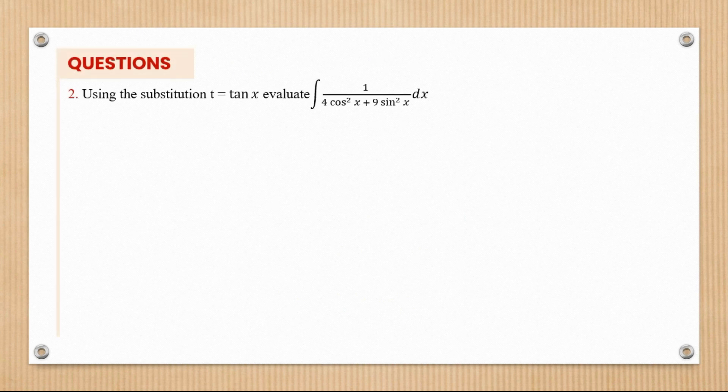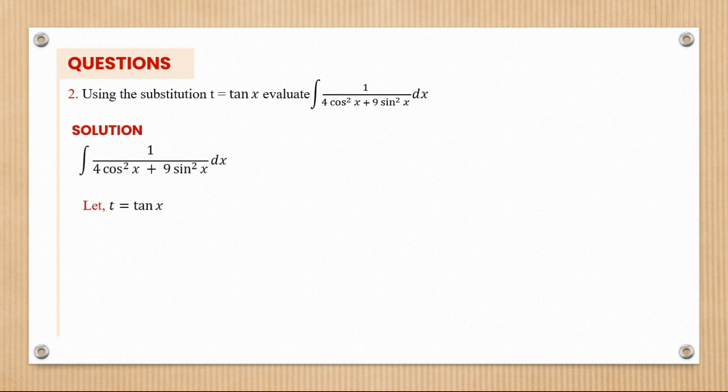Let's look at another question. In this question, we'll be told that using the substitution t equals tan x, evaluate the integral of 1 over 4 cos squared x plus 9 sine squared x dx. This is going to require trig substitution where we let t be equal to tan x.